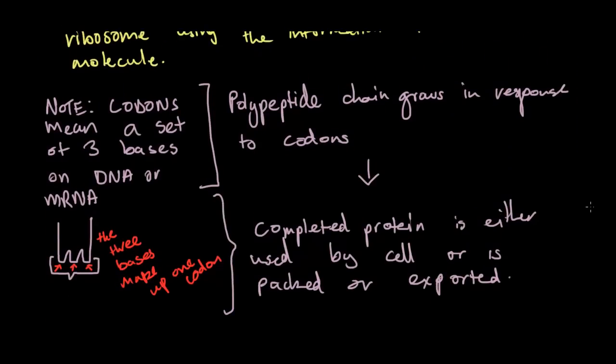So I haven't actually explained what codons are. And I'll just do that really quickly now. Codons mean that they're a set of three bases on DNA or mRNA. So codons, they're the three nitrogen bases on either DNA or mRNA. So here's a little diagram. So suppose this was our three, so that's one, that's two, and that's three. That's our codon. This entire thing is our codon. So three bases make up one codon.